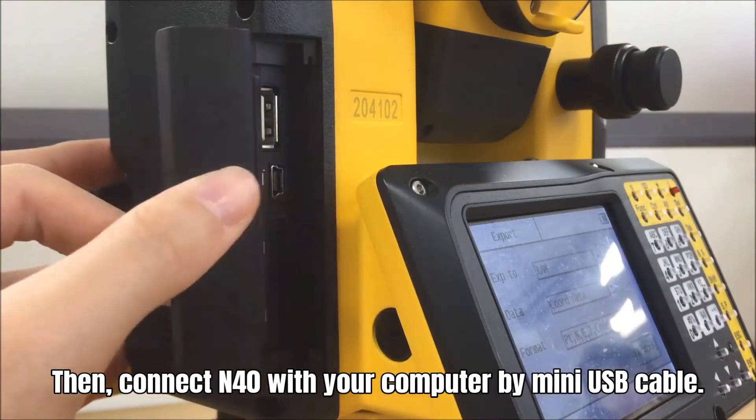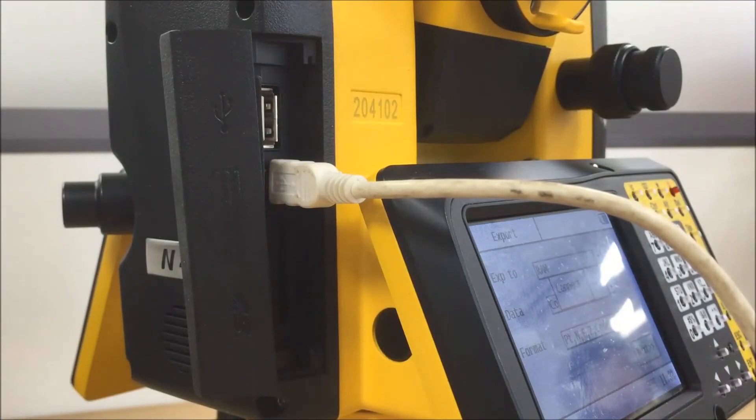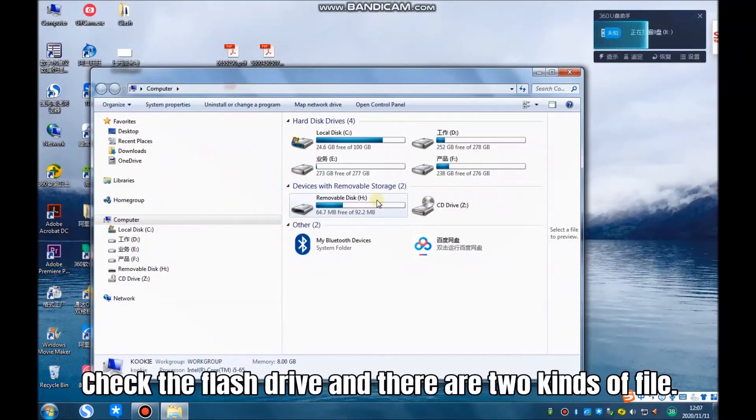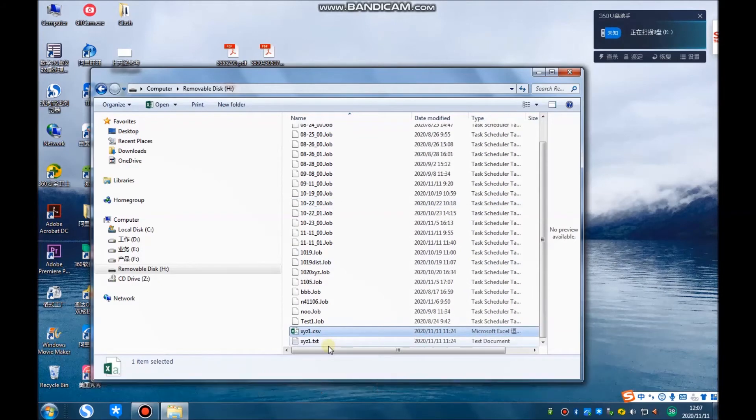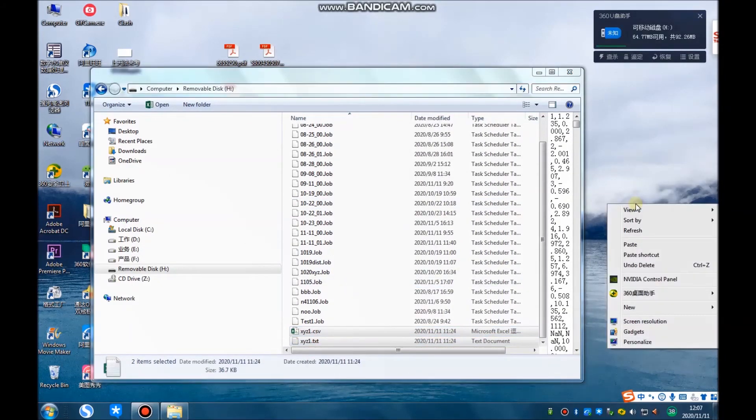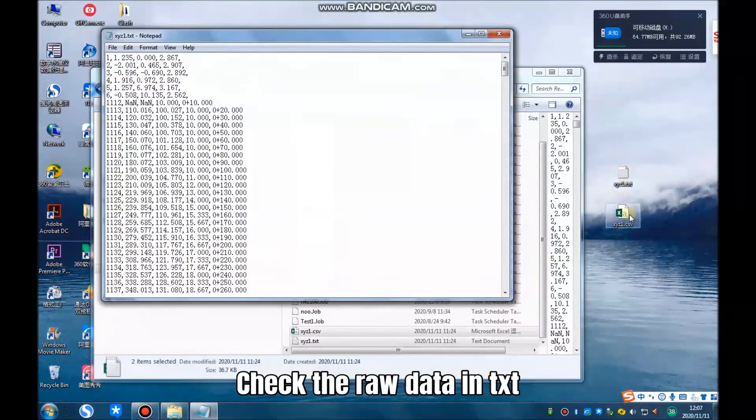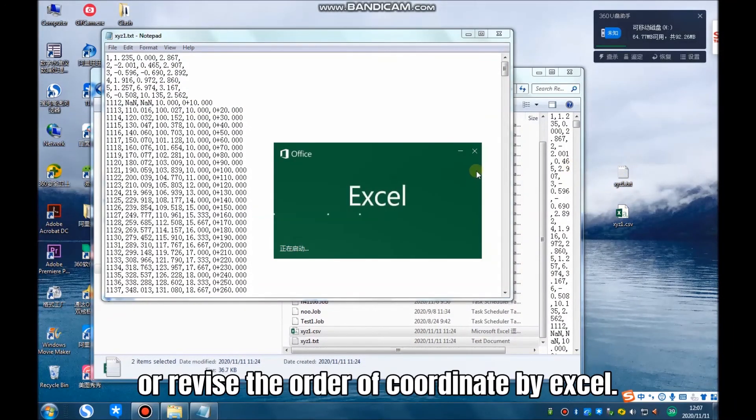Then connect N40 with your computer by mini USB cable. Check the flash drive and there are two kinds of coordinate files: one is text, the other is CSV. Check the raw data in text or revise the order of coordinates by Excel.